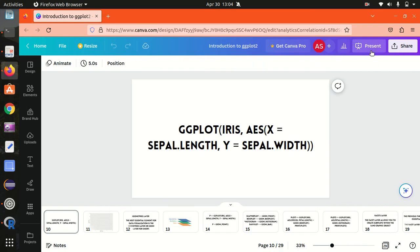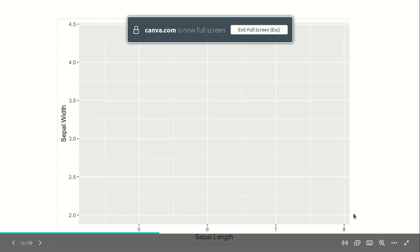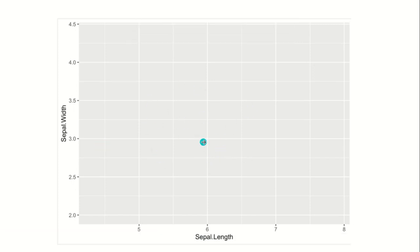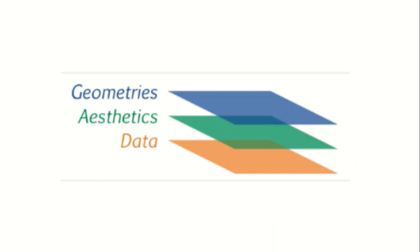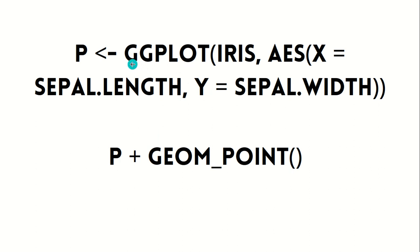Next we have the geometry layer — a very important layer where we specify the visual element, meaning which type of graph or plot to use to display the data. For this we use a geom function. We've already added the data and aesthetic layers; now let's add the geometry layer on top. The syntax specifies ggplot with iris as dataset, aes for x and y axes, and now we add geom_point. You might wonder what geom_point means — geom clearly refers to geometry, and point refers to a scatter plot.